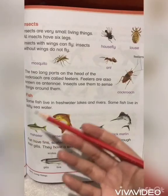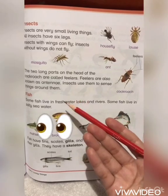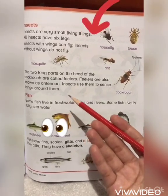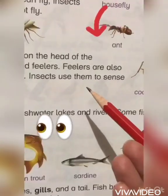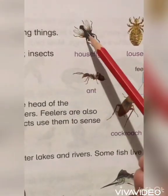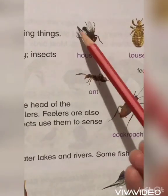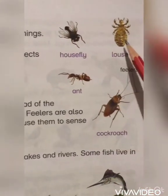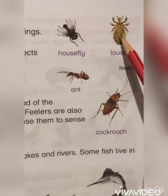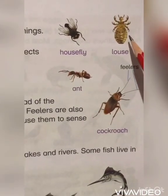Let's have a closer look at the pictures given on this page regarding insects. This is a housefly — it has wings and six legs. This is a louse — it has six legs and wings.